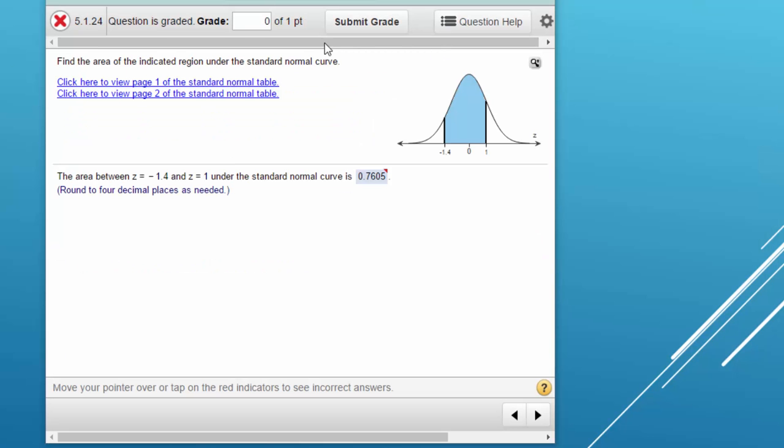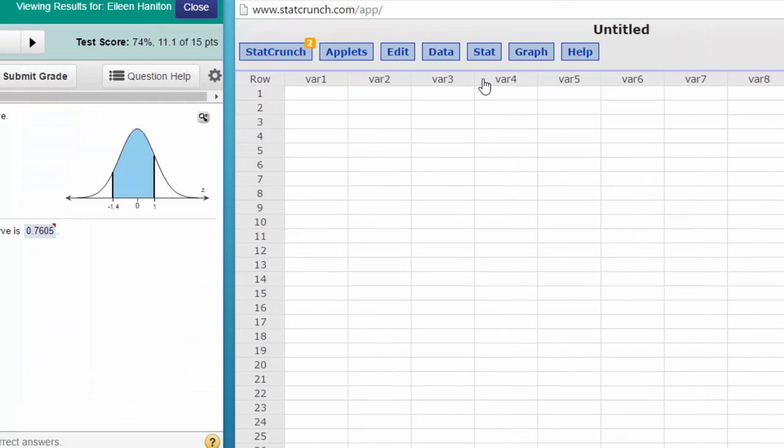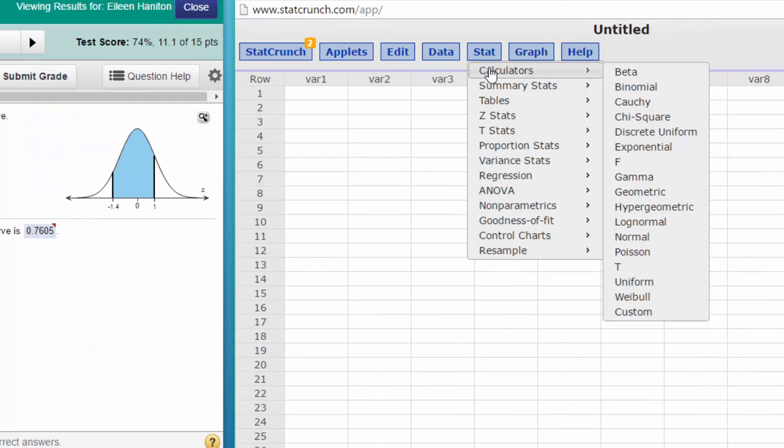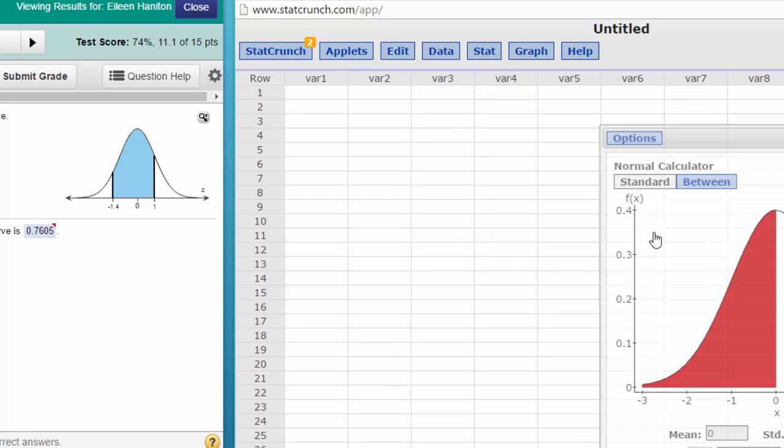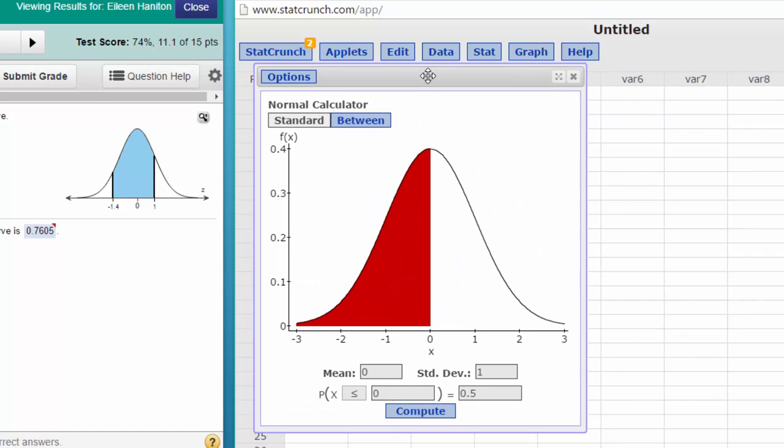We're going to bring up StatCrunch here. We go to Stat Calculators Normal. Bring up our dialog box.